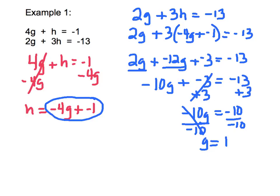We just completed step 3, which was solve the equation to find the value of the variable. We just solved and found that the value of g equals 1. Step 4, use that answer to substitute into the other equation to calculate the other variable. So I'm going to go back to this guy. I'm going to put 1 in place of g so I can find h. h is equal to negative 4 times 1 plus negative 1. That gives me negative 4 plus negative 1, so h equals negative 5.